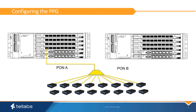Before beginning the configuration process, the secondary Pond port should be disabled. Then the proper cabling and attenuation should be applied. Creating a PPG prior to properly cabling out the secondary Pond could inadvertently cause a switch and loss of traffic.